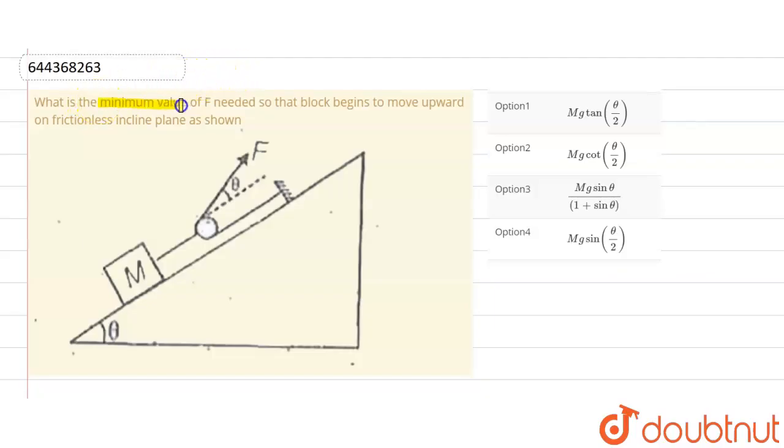What is the minimum value of F needed so that block begins to move upwards on a frictionless inclined plane?